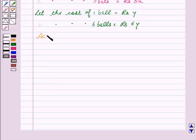So, it can be written as 3X, that is 3 bats, plus 6Y, that is 6 balls, equal to Rs. 3900.